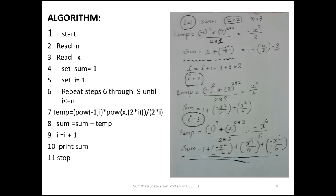When i equals 3: temp equals (-1)^3 times x^(2×3) divided by (2×3), which gives minus x⁶/6. Then i equals i plus 1, making i equal to 4. Since 4 is greater than n equals 3, the loop exits. Print sum: 1 minus x²/2 plus x⁴/4 minus x⁶/6.